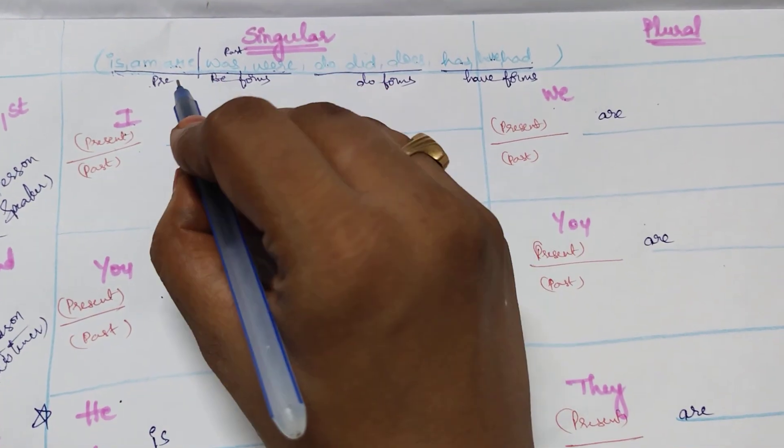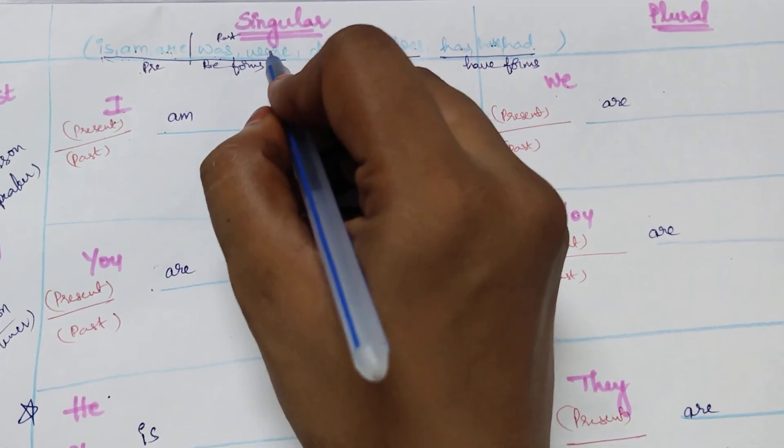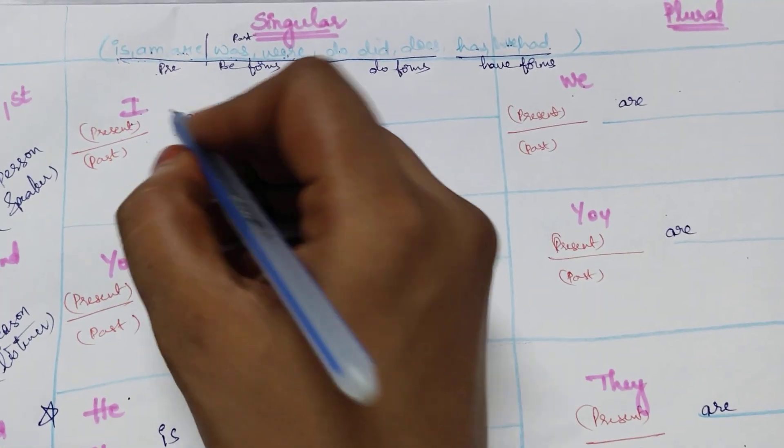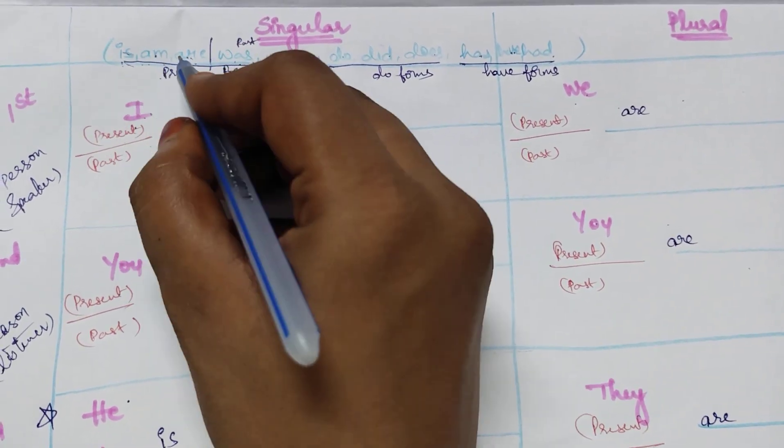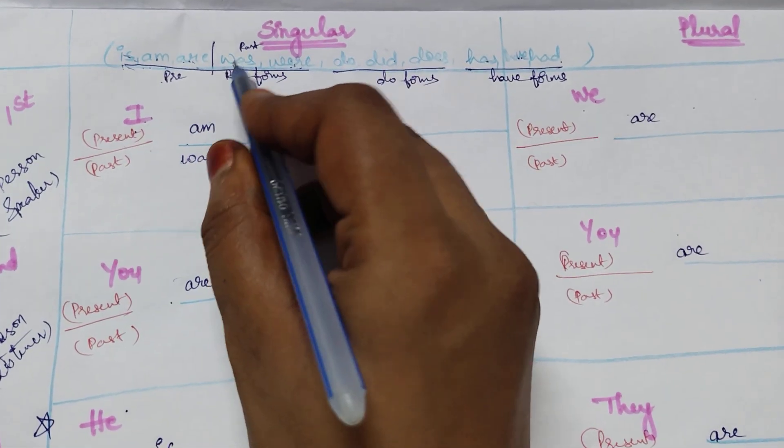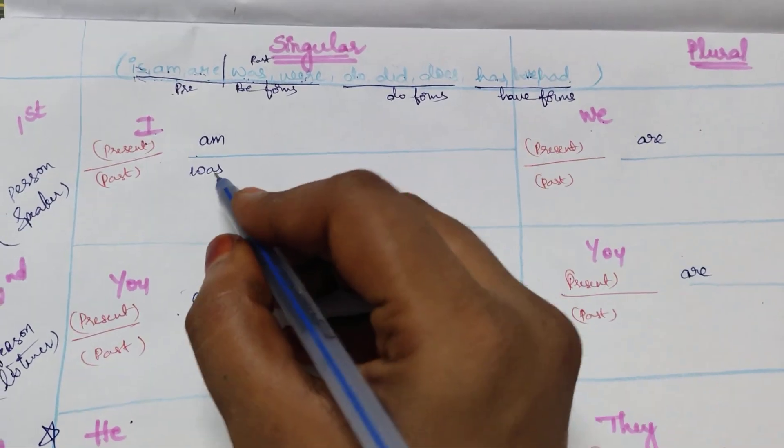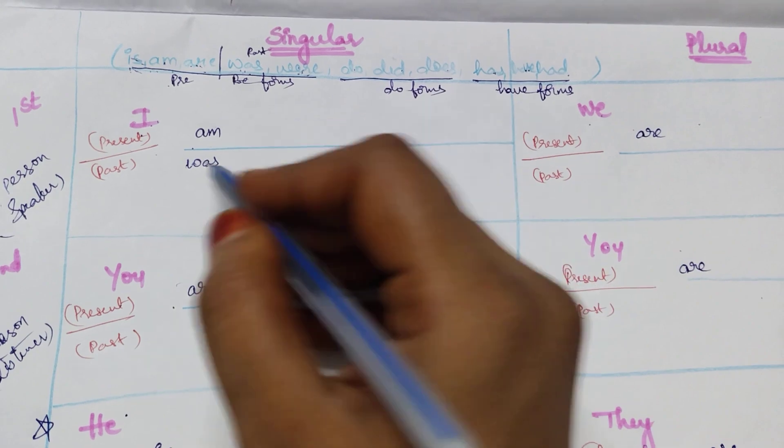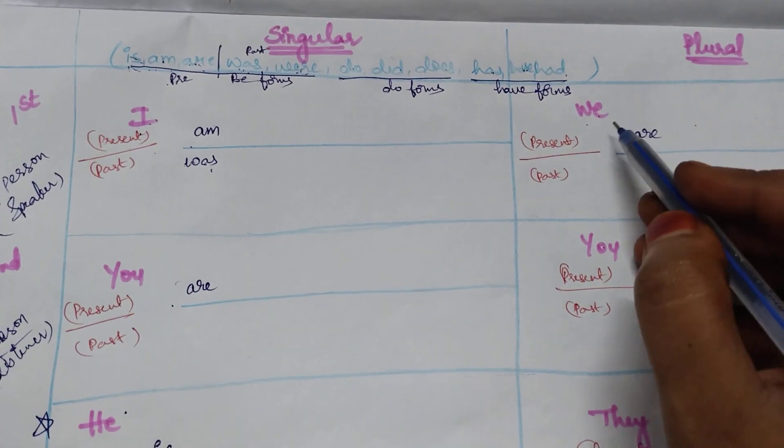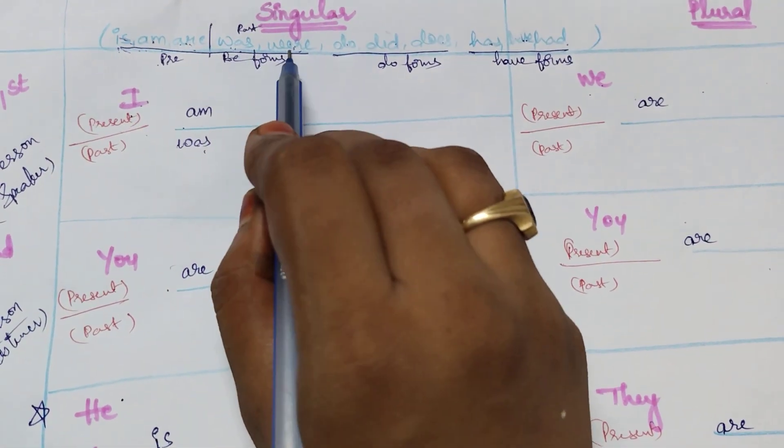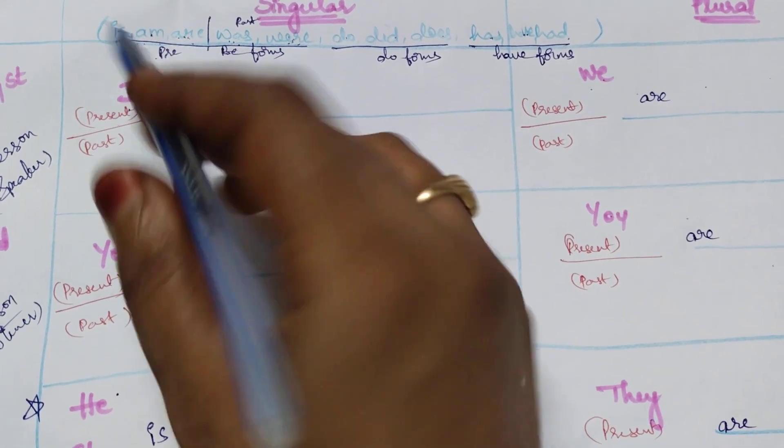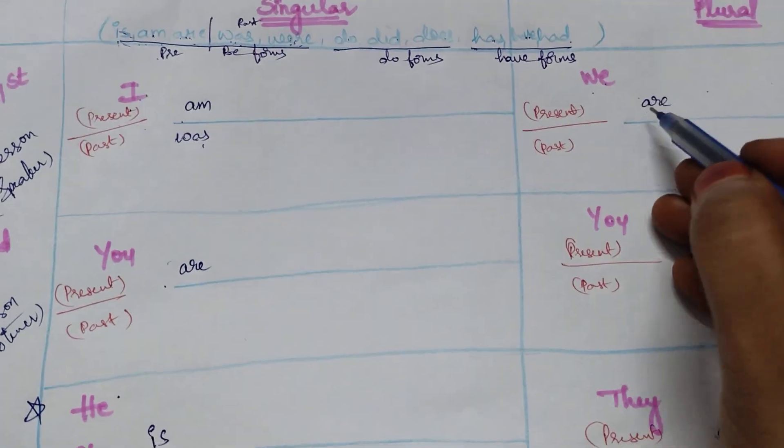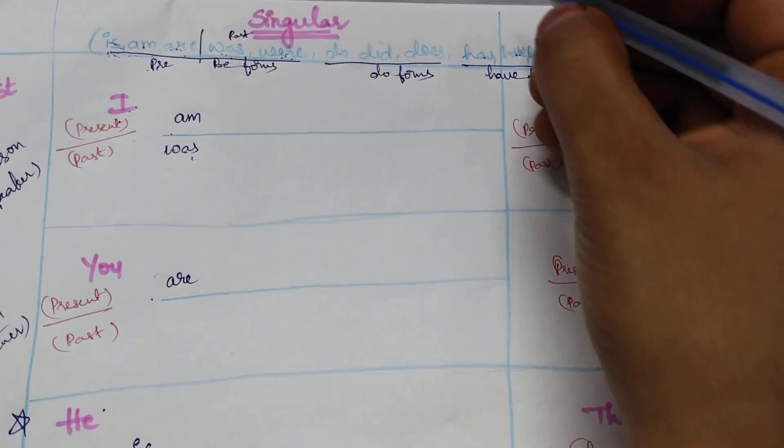Now coming to past, among be forms, was or were. So I was. Now we forget about these three, only remember about these two. So was or were. We have already selected was here. I was. Now see here, how many options I have now? Either was or were. Forget about these three, only these two. We were. Remember, is changes to was.